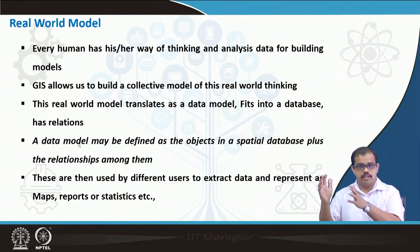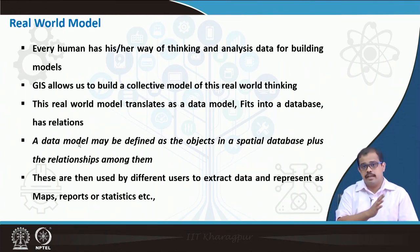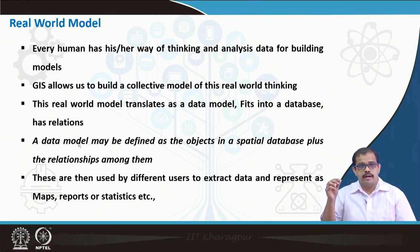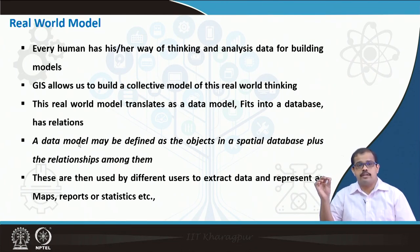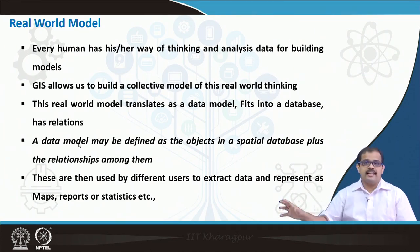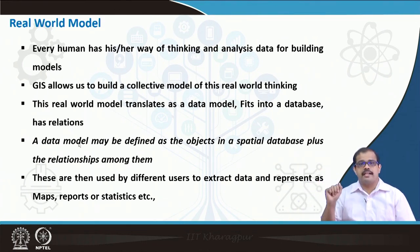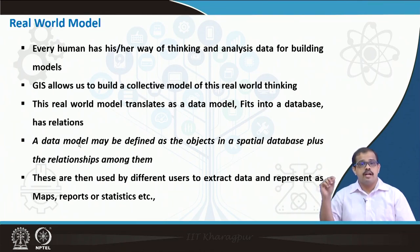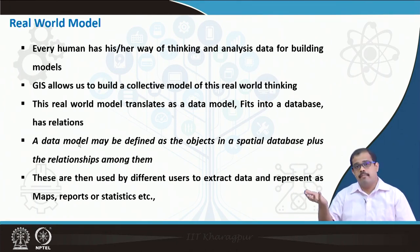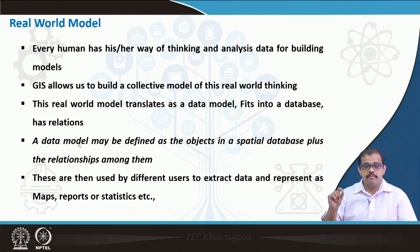So you have vector data and raster data — two different types of data models. These are used by different users to collect data and represent, extract data, and present as maps, reports, and statistics. Once you have put anything in the database, as mentioned in previous lectures, you can do any kind of queries and analysis that is possible with that data. You can do any analysis that is reasonable and can be represented in the form of a map, report, or statistic. That is where your database and data model help.